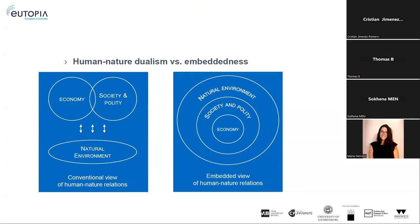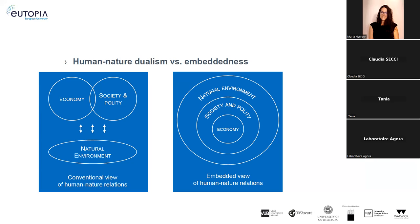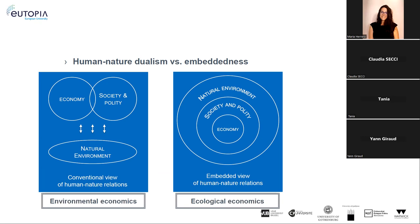There are two fundamentally different views. First, we have the dualism between humans and nature — the instrumental, Enlightenment-based mastery of nature — in which the natural environment is separated from social and political systems. This is the conventional, hegemonic view of how humans have related to nature, and also the source of many of the problems we are now experiencing.